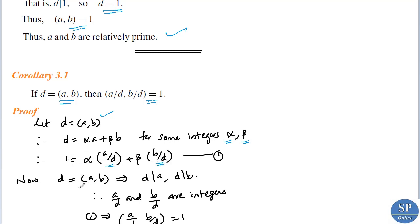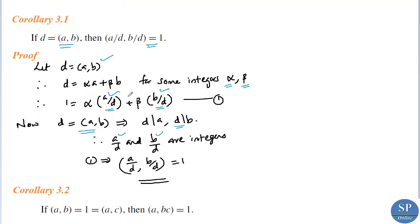Since d equals GCD(a, b), d divides a and d divides b, so d is a common factor of a and b. Therefore a/d and b/d are integers. From the equation 1 equals alpha·(a/d) plus beta·(b/d), we conclude that GCD(a/d, b/d) equals 1, which is the corollary.